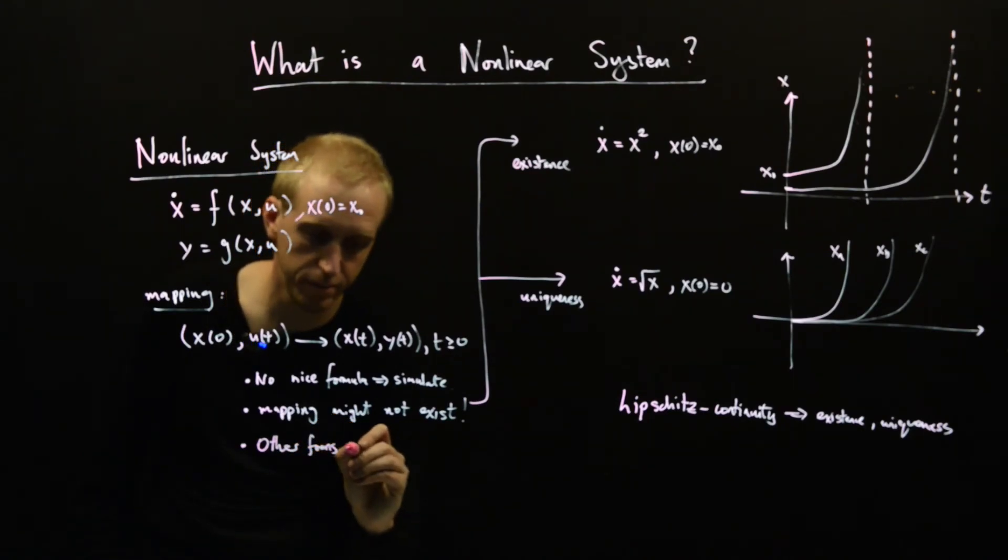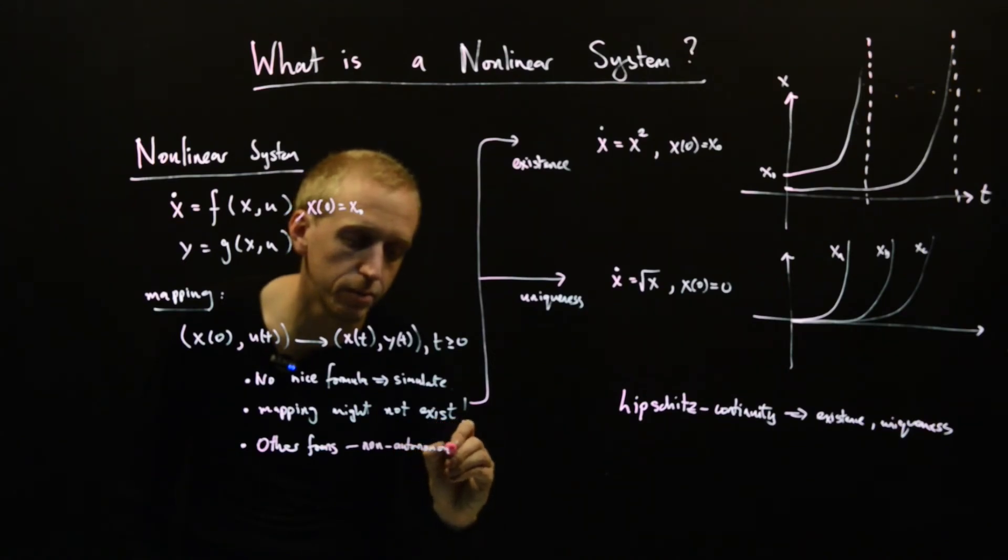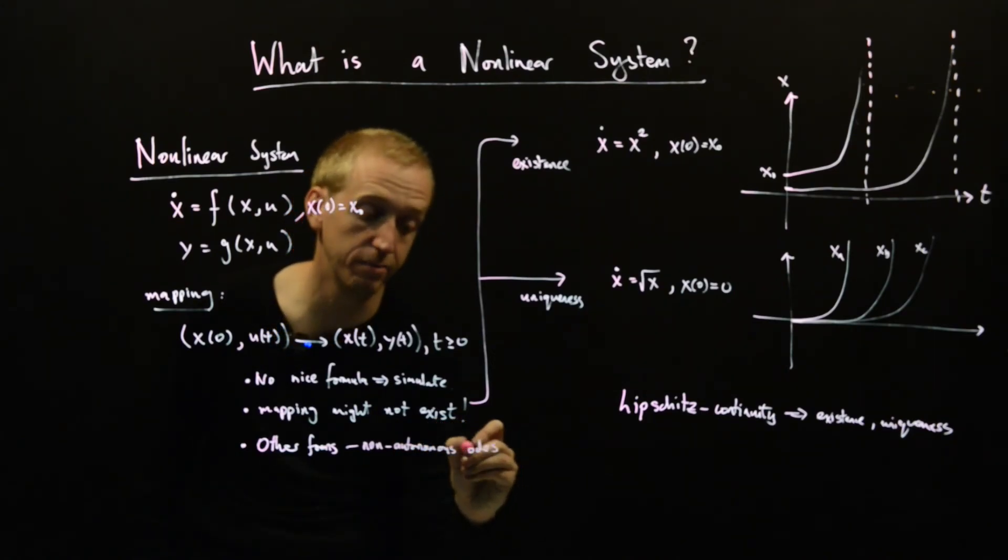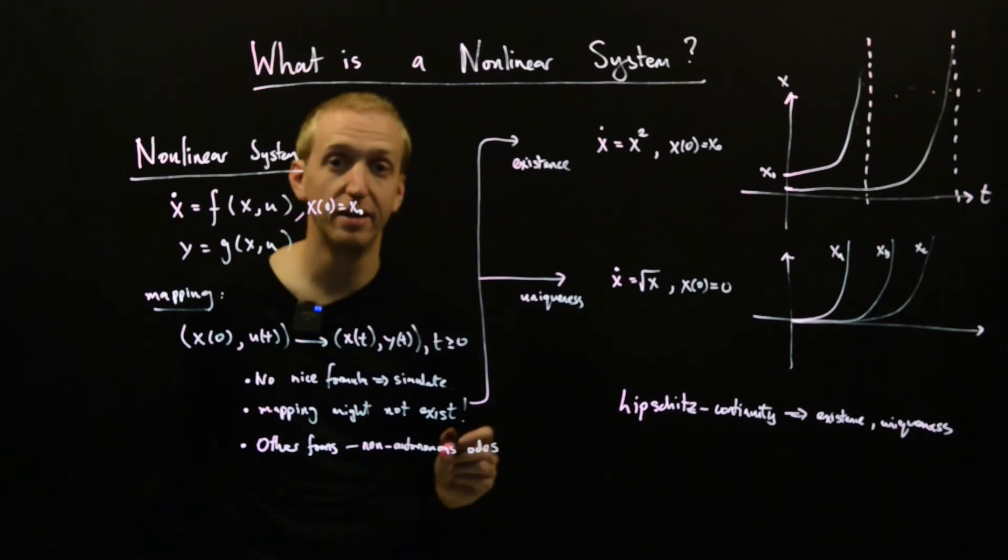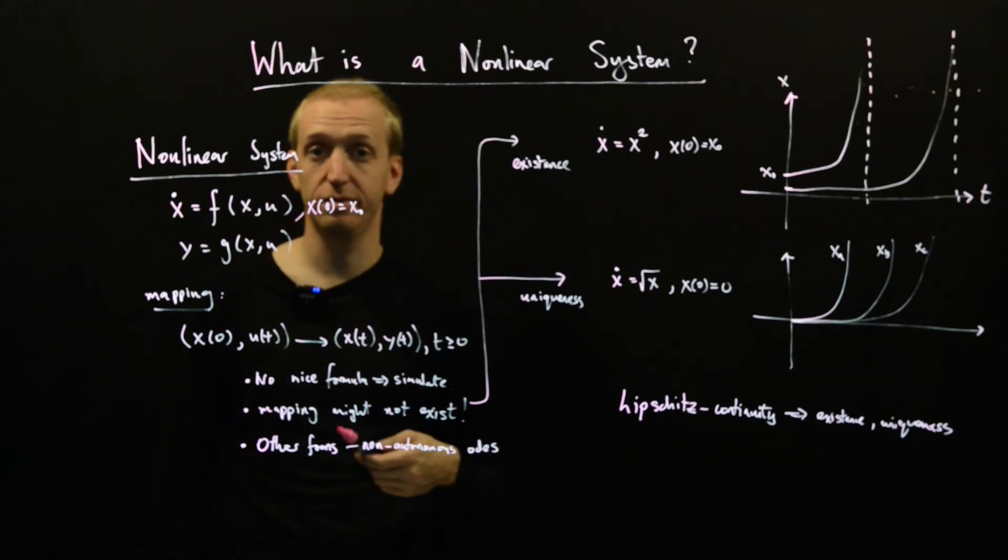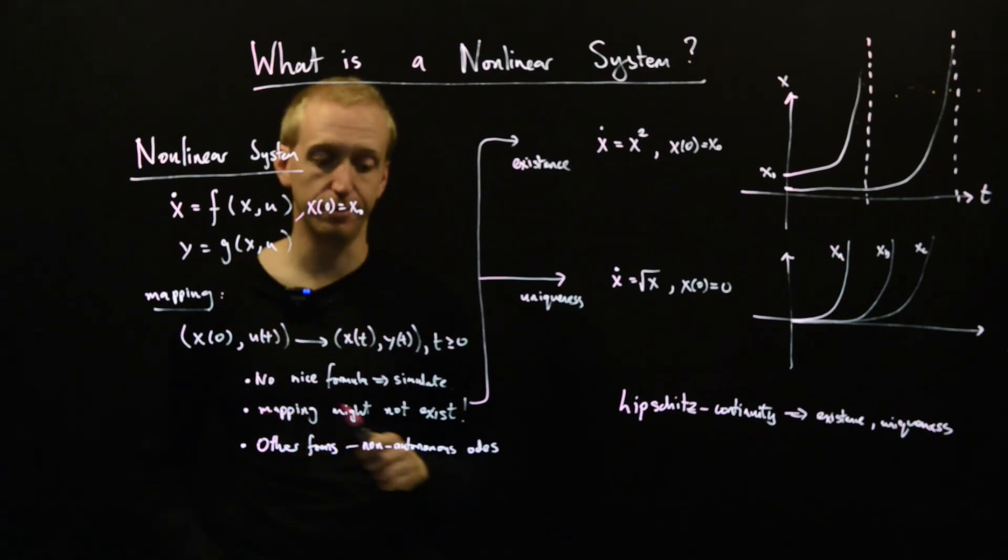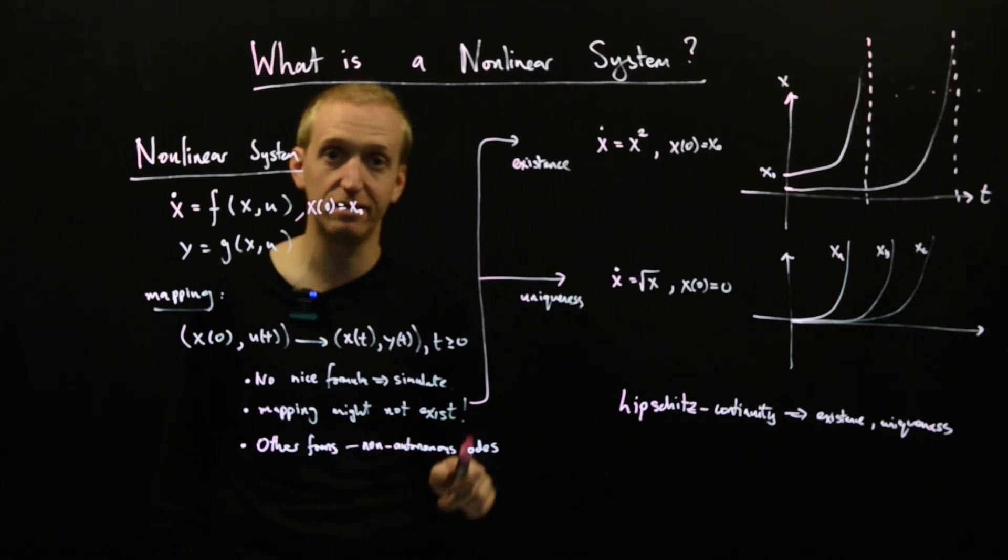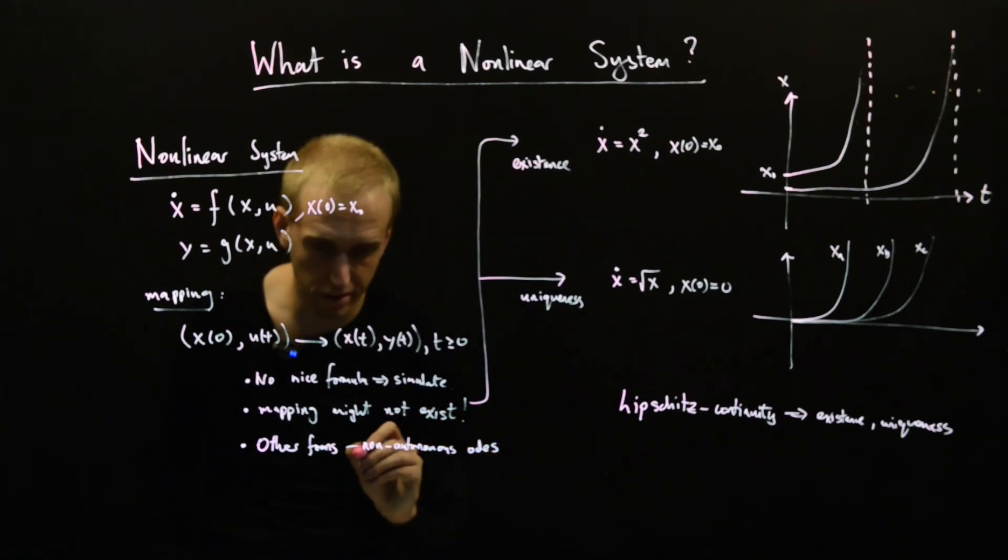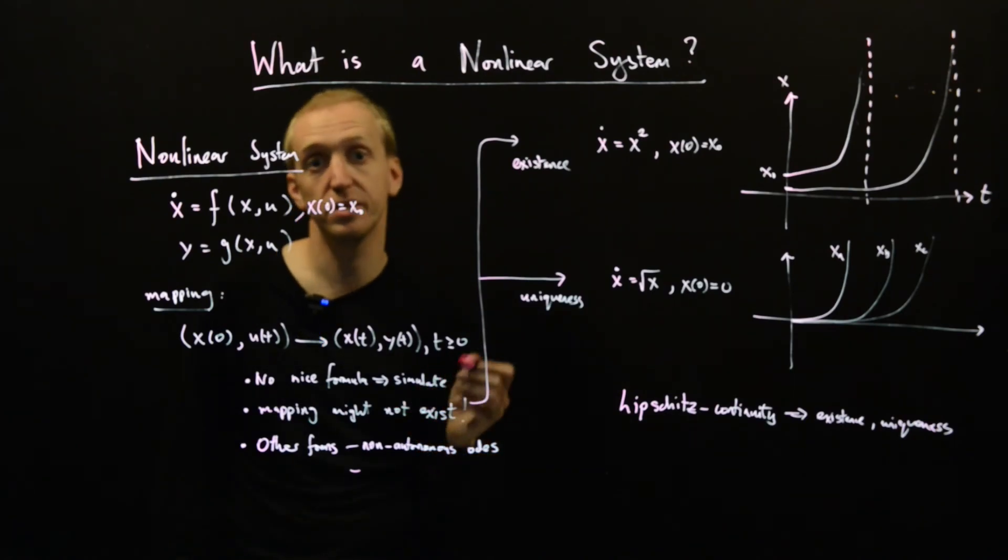Some other forms - those are so-called non-autonomous ODEs. So these are non-autonomous differential equations, just means that they depend on time as well. In fact, every non-autonomous differential equation can be turned into an autonomous differential equation on this form. So there's not really any extra generality to taking this form, but it's a form that you might see in the future. And another form that's maybe more common, especially if you study lots of mechanical systems, is so-called implicit form ODEs.